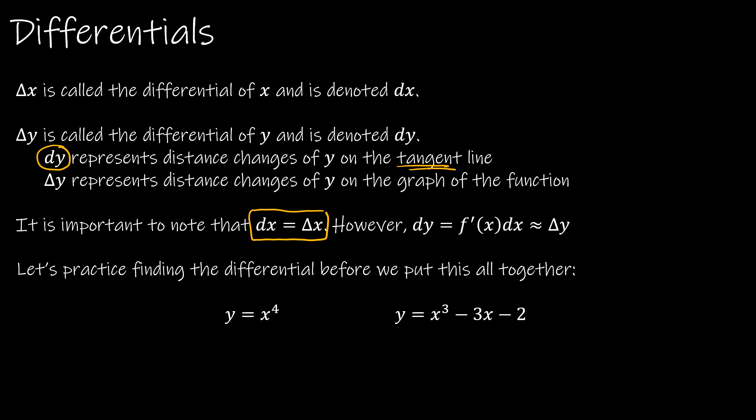Thinking back to that picture with the green tangent line, we're talking about the distance or the changes from x equals 4, y equals 2, to x equals 4.1, y equals 2.025. Delta y represents the distance changes of y in the graph of the actual function — that was 2.02485... and so forth. Delta x and dx are the exact same thing, but dy, found by taking f prime of x times dx, is going to approximate delta y.